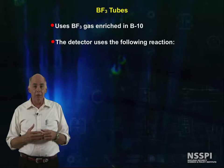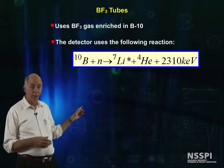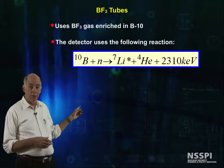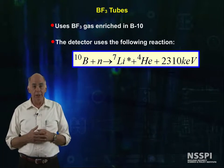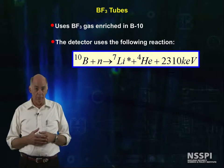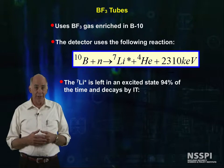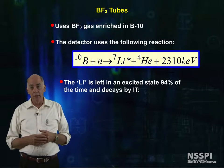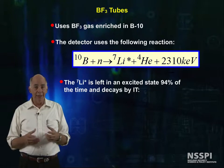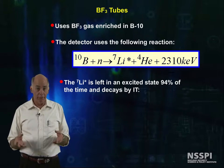The following reaction creates charged particles in the tube. A neutron interacts with boron-10 to form lithium-7 plus an alpha particle. Lithium-7 is left in the excited state 94% of the time.